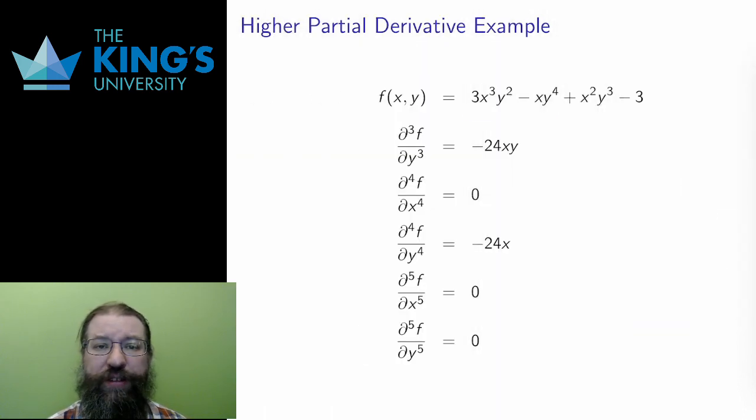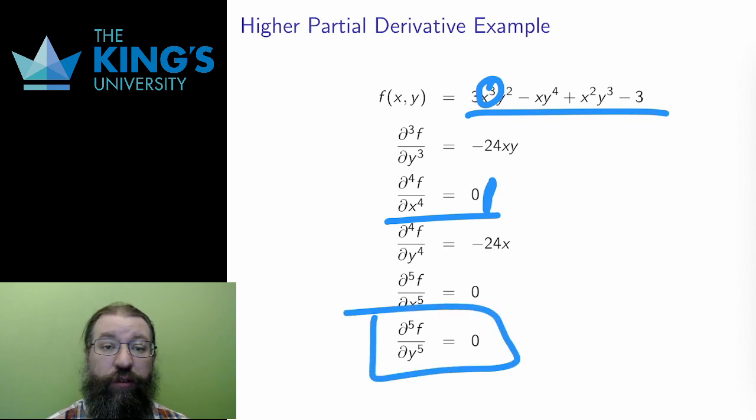Let me keep going with the same function. Here are yet more higher derivatives. After four derivatives in x, the derivative is zero, since this exhausts all of the degree three pieces in x. Likewise, after five derivatives in y, the higher derivative is again zero, exhausting the degree four terms in y in the polynomial.